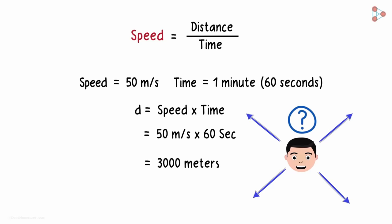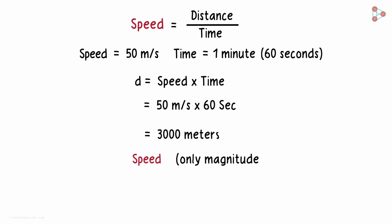Speed offers only the magnitude, making it what we call in physics, a scalar quantity. It doesn't specify the direction. It just tells us how much ground is covered in unit time, regardless of the direction travelled.